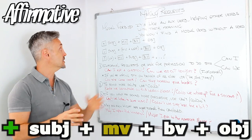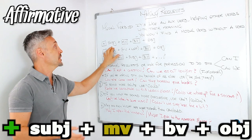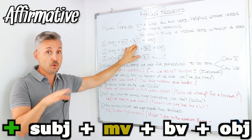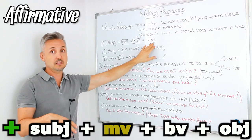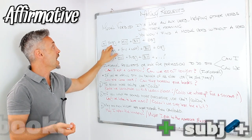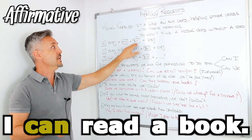To make a positive sentence, we need the subject plus the modal verb plus the base of the verb without to plus the object. So, for example, I can read a book.